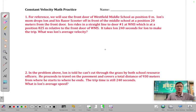So let's go ahead and read. For reference, we will use the front door of Westfield Middle School as position zero meters. Ion's mom drops him and his Razor scooter off in front of the middle school at a position of 20 meters from the front door. Ion rides in a straight line to door number one at WHS, which is at position 825 meters relative to the front door of the middle school. It takes Ion 240 seconds to make the trip. What was his average velocity?